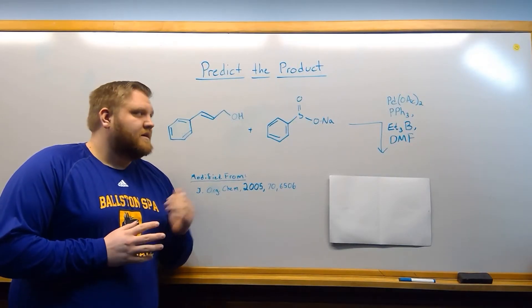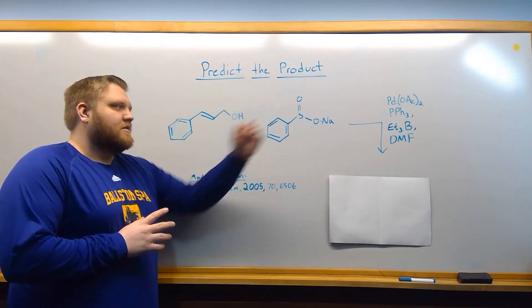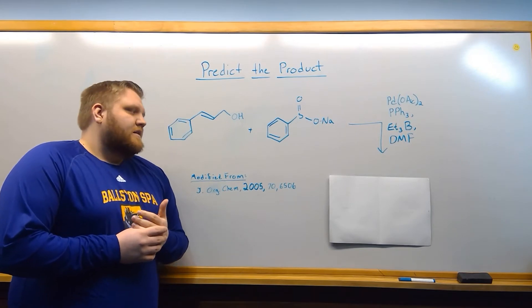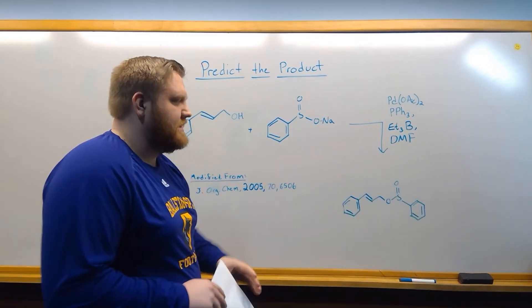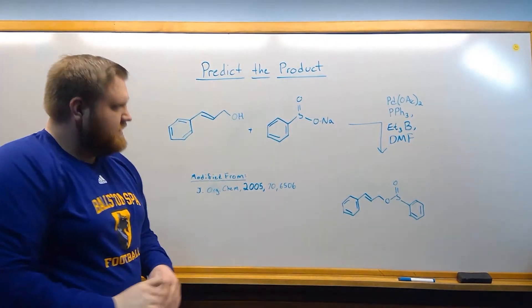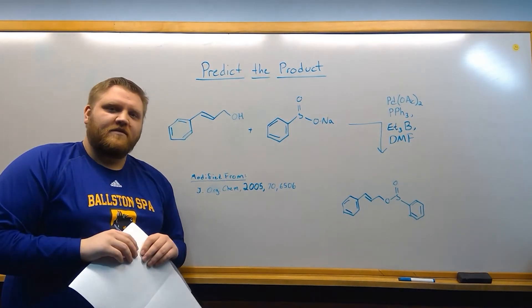We've taken a look at the mechanism. Here's our predictive product problem. Here's our two starting materials. Our reaction conditions are over there. Pause the video, try to work it out if you want. And our product ends up being this right here, where we substituted for the alcohol with our O- from sulfate. That's the video. Hopefully you enjoyed it. Thank you very much.